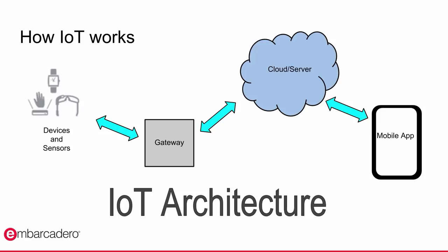IoT is everywhere — in retail, self-driving cars, drones, home security, media, healthcare, and energy management. Devices and sensors collect and send large varieties of data through gateways that act like a bridge to networks, so data can be passed to a cloud platform or data center where it's processed using analytics to create useful information that can be visualized, filtered, and reported on by other applications.